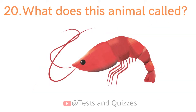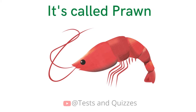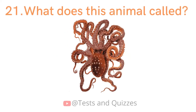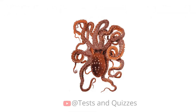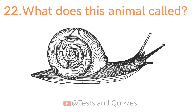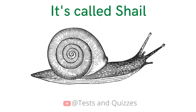What does this animal call? It's called Prawn. What does this animal call? It's called Octopus. What does this animal call? It's called Snail.